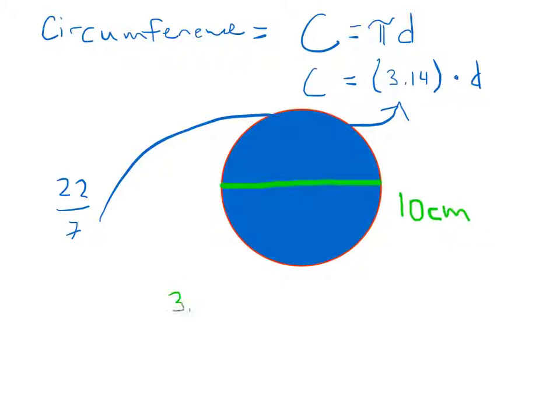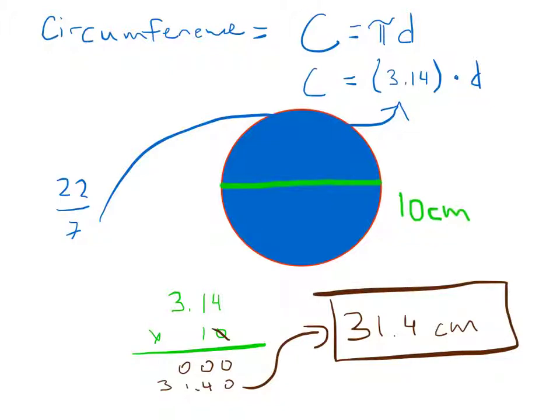All right, so I plug that in: 3.14 times 10, because this is 3.14 is pi and this is my diameter, and if I multiply these two I'll get my circumference. So let's multiply those. 0 times 4 will be 0, 0 times 1 will be 0, 0 times 3 will be 0. So I really didn't need that there. Put the 0 down here. 0 times 4, 1, 3. So I've just moved my decimal one place. So my circumference for this circle is 31.4 centimeters.